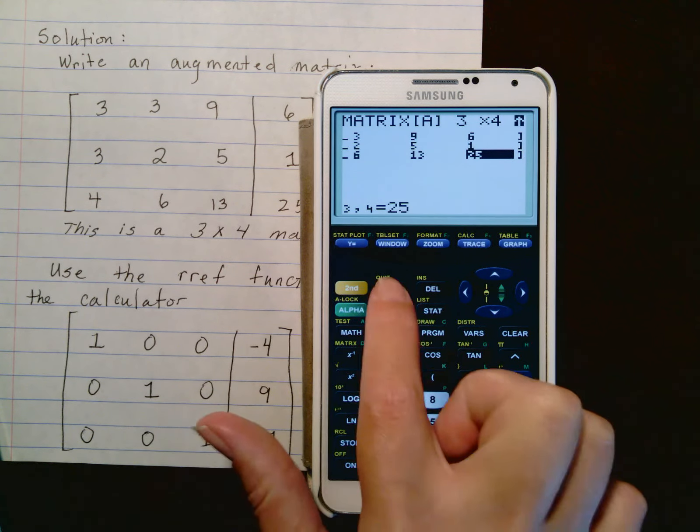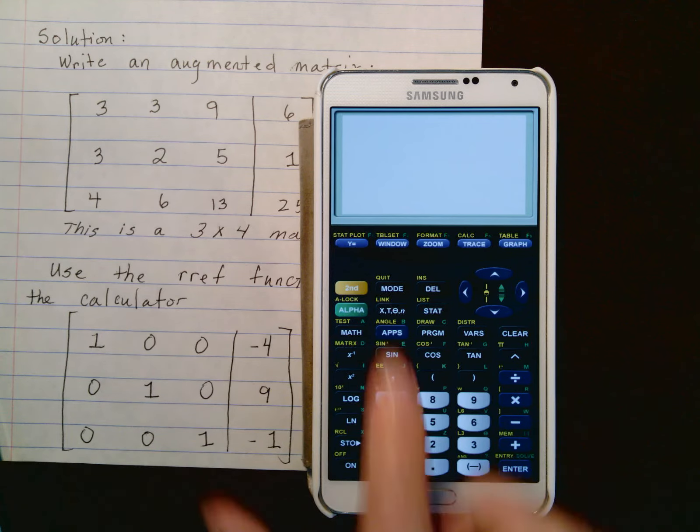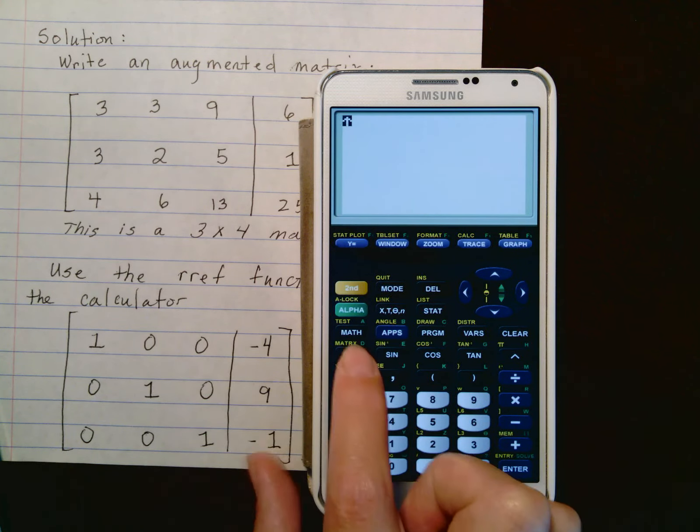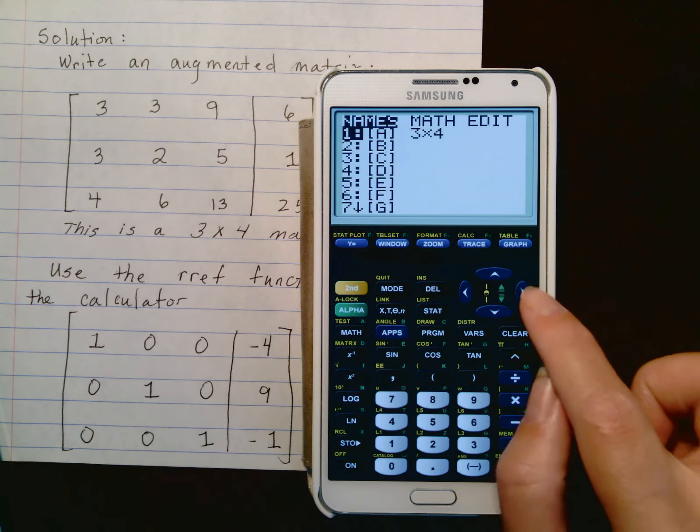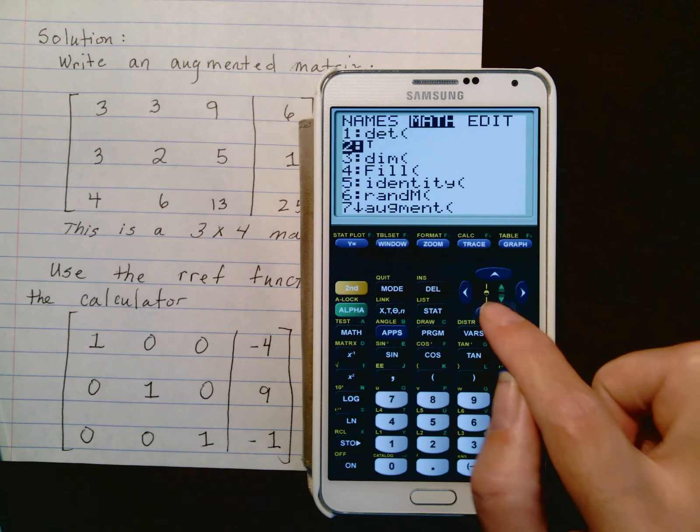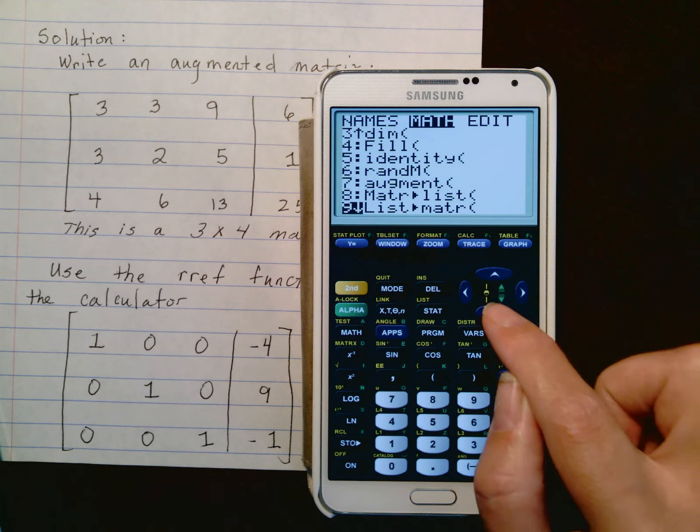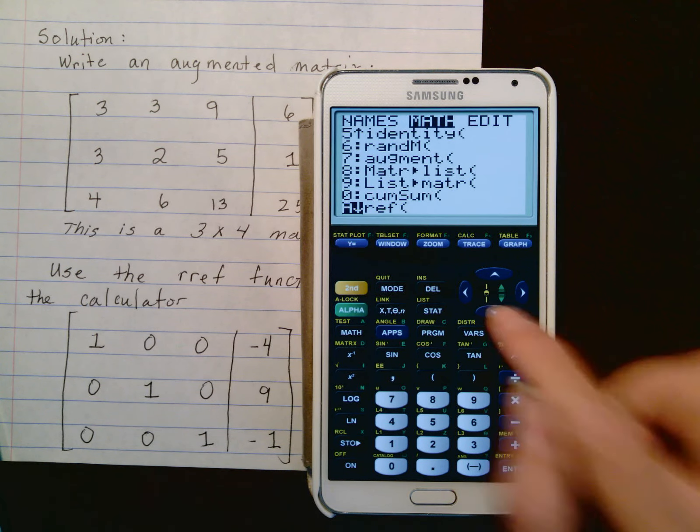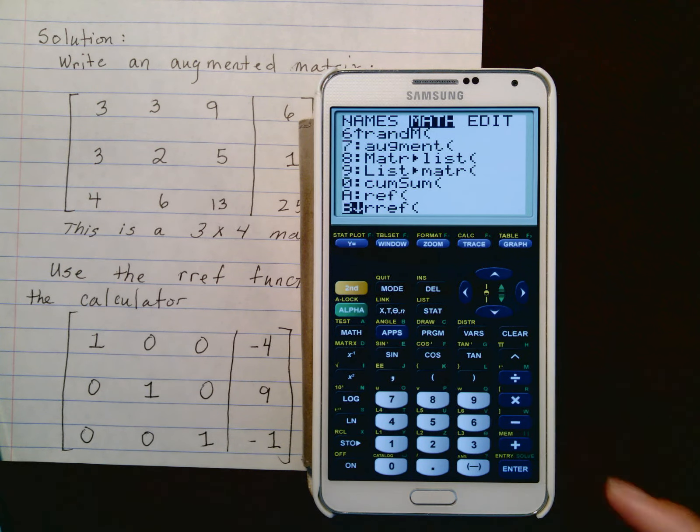Now to get to the function, hit 2nd, matrix. Go over to math and scroll down until you see the function RREF, which stands for reduced row echelon form. There it is, and then hit enter.